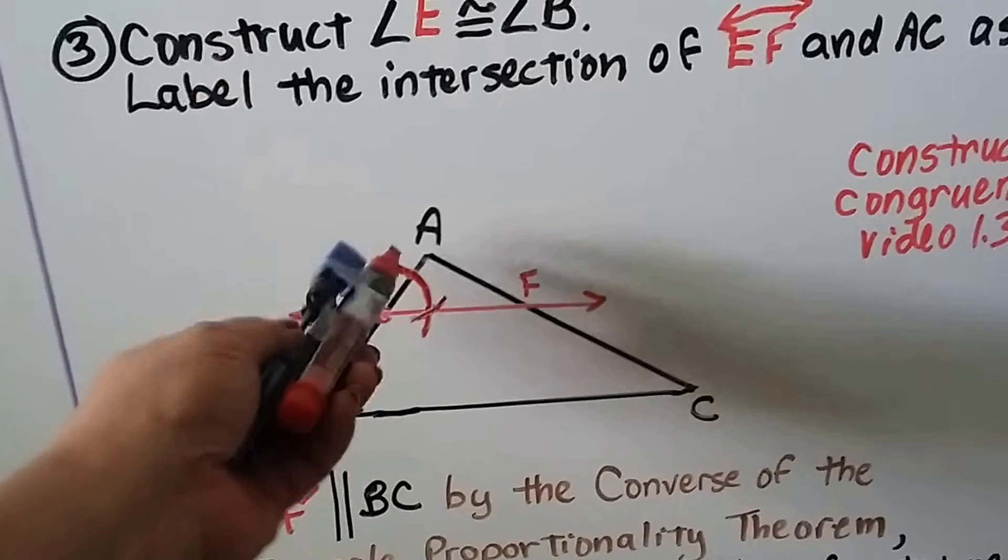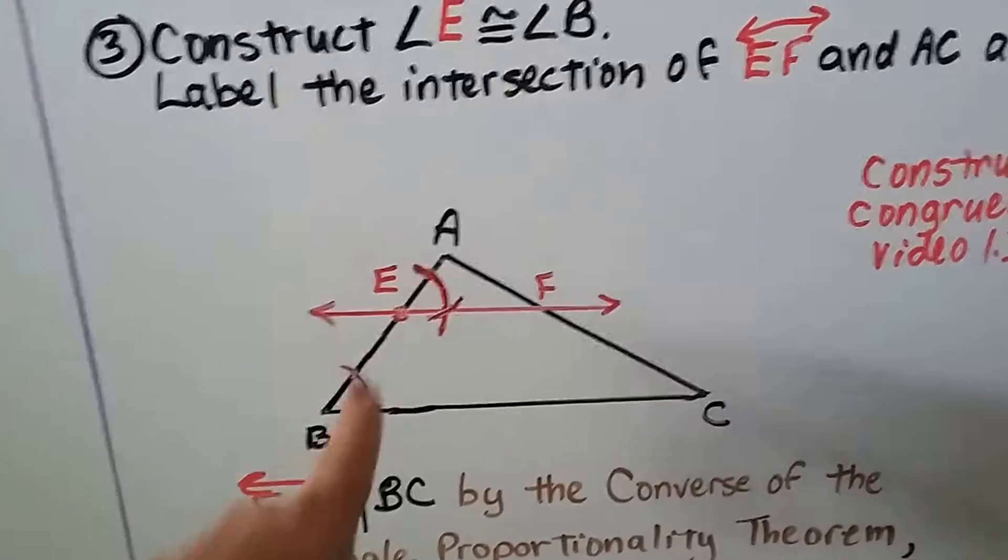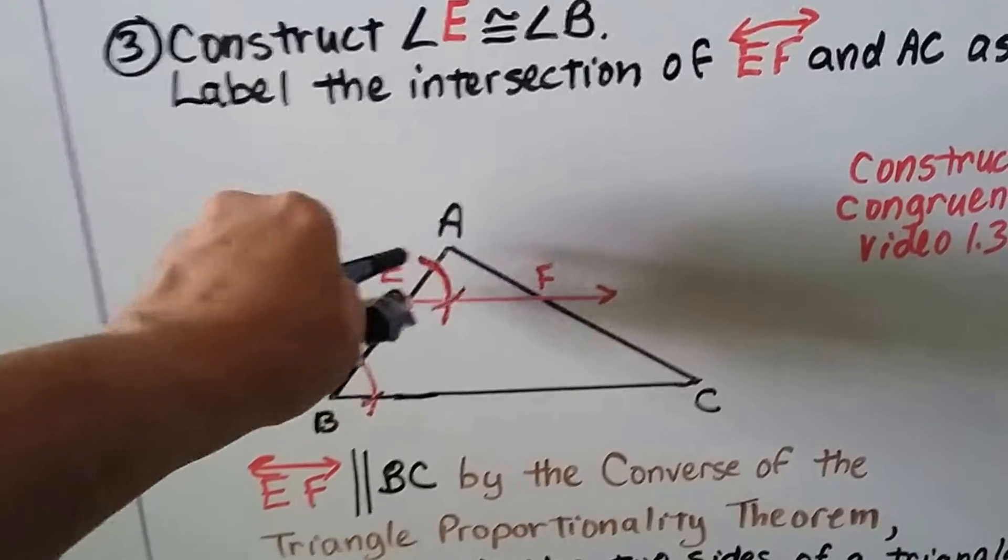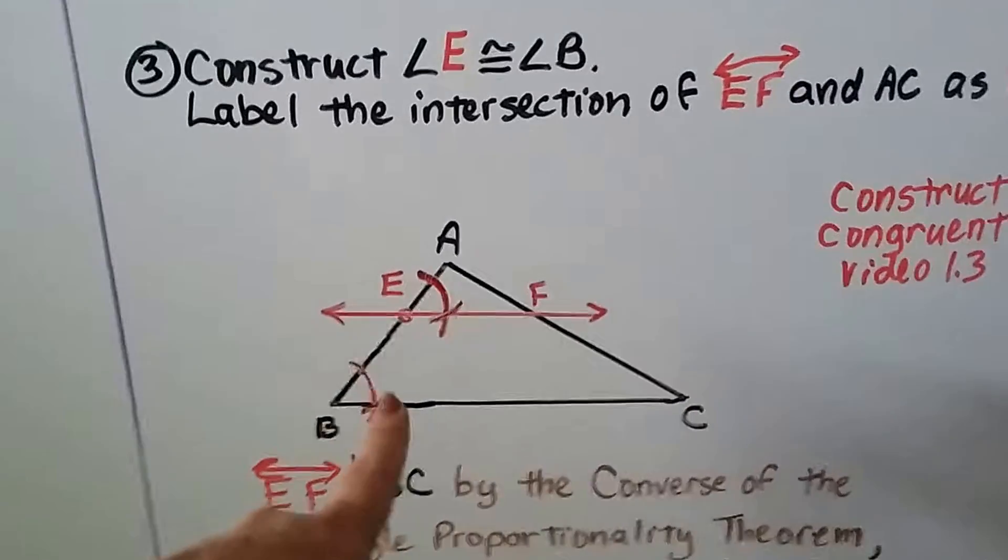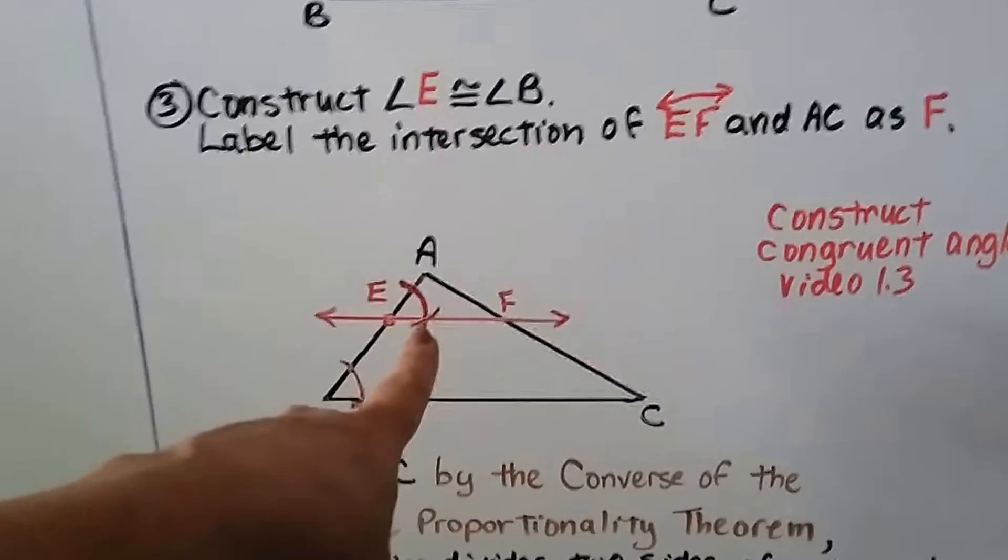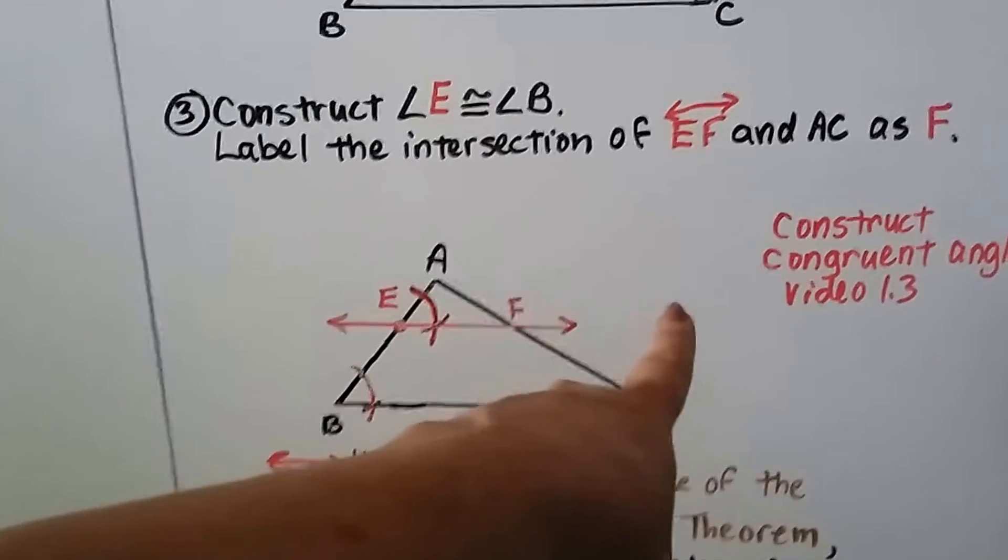Once you've got that arc made, put your point where that new intersection is and make a little arc there. Then you're going to take your straight edge and you're going to make a line going through E and that intersection all the way through.